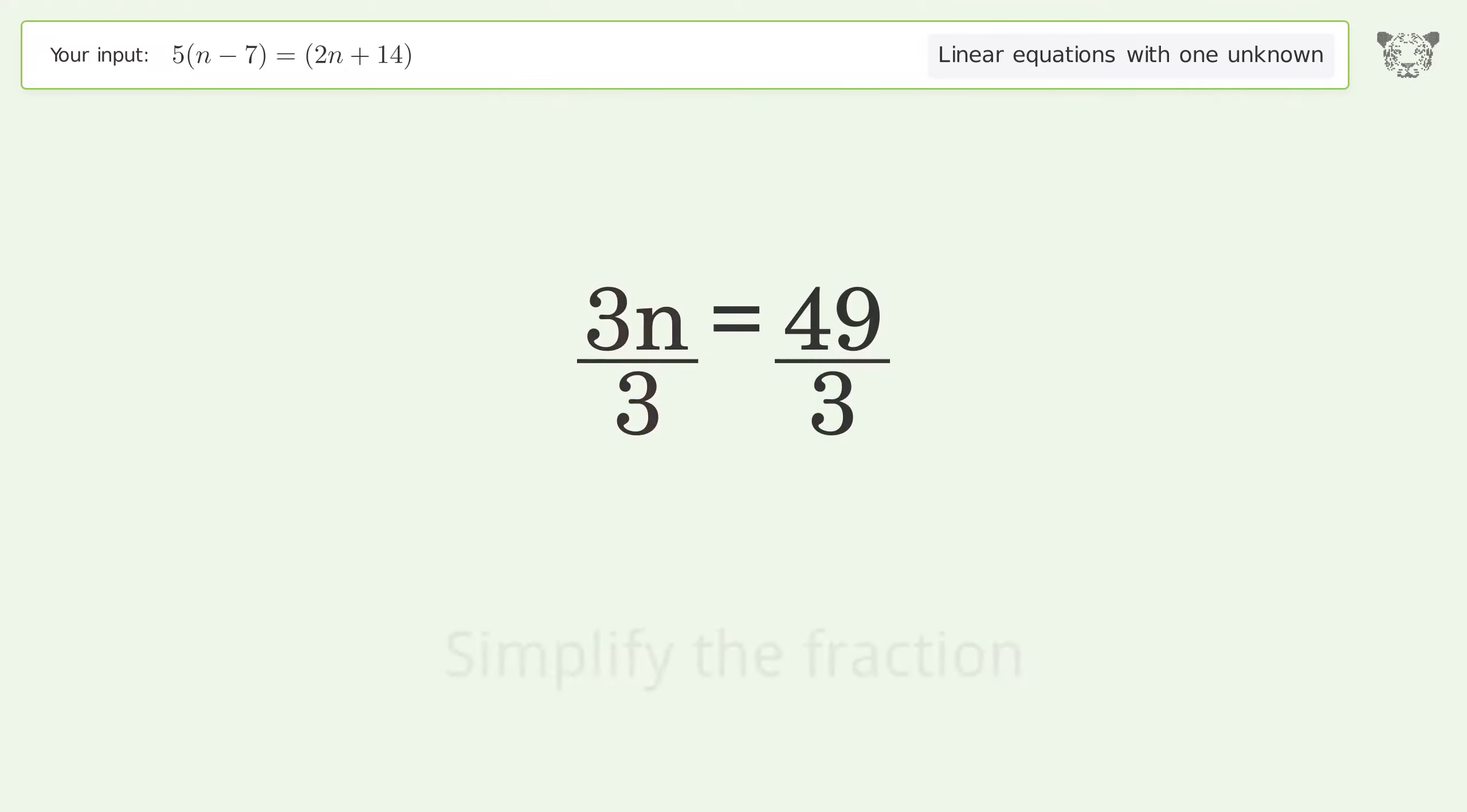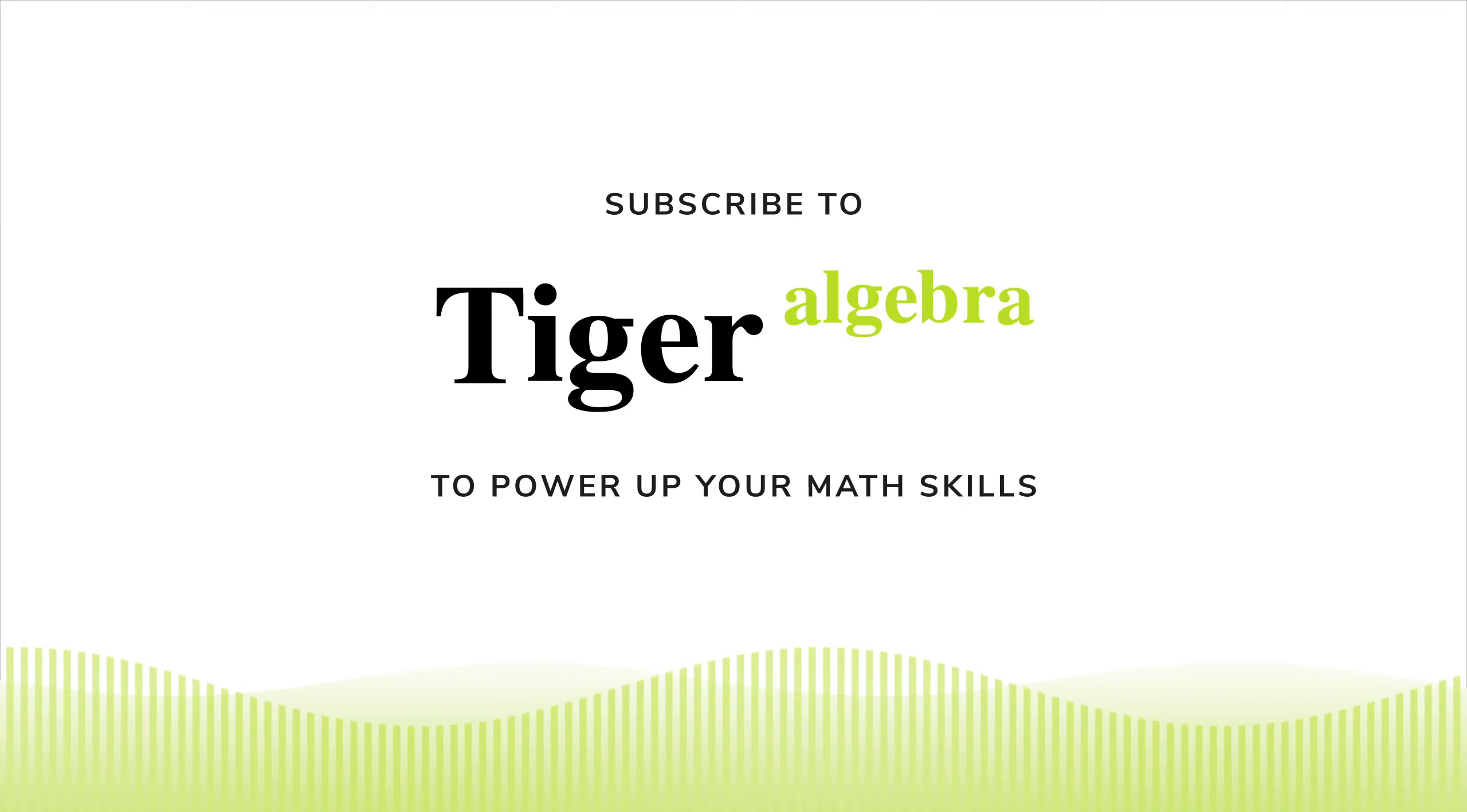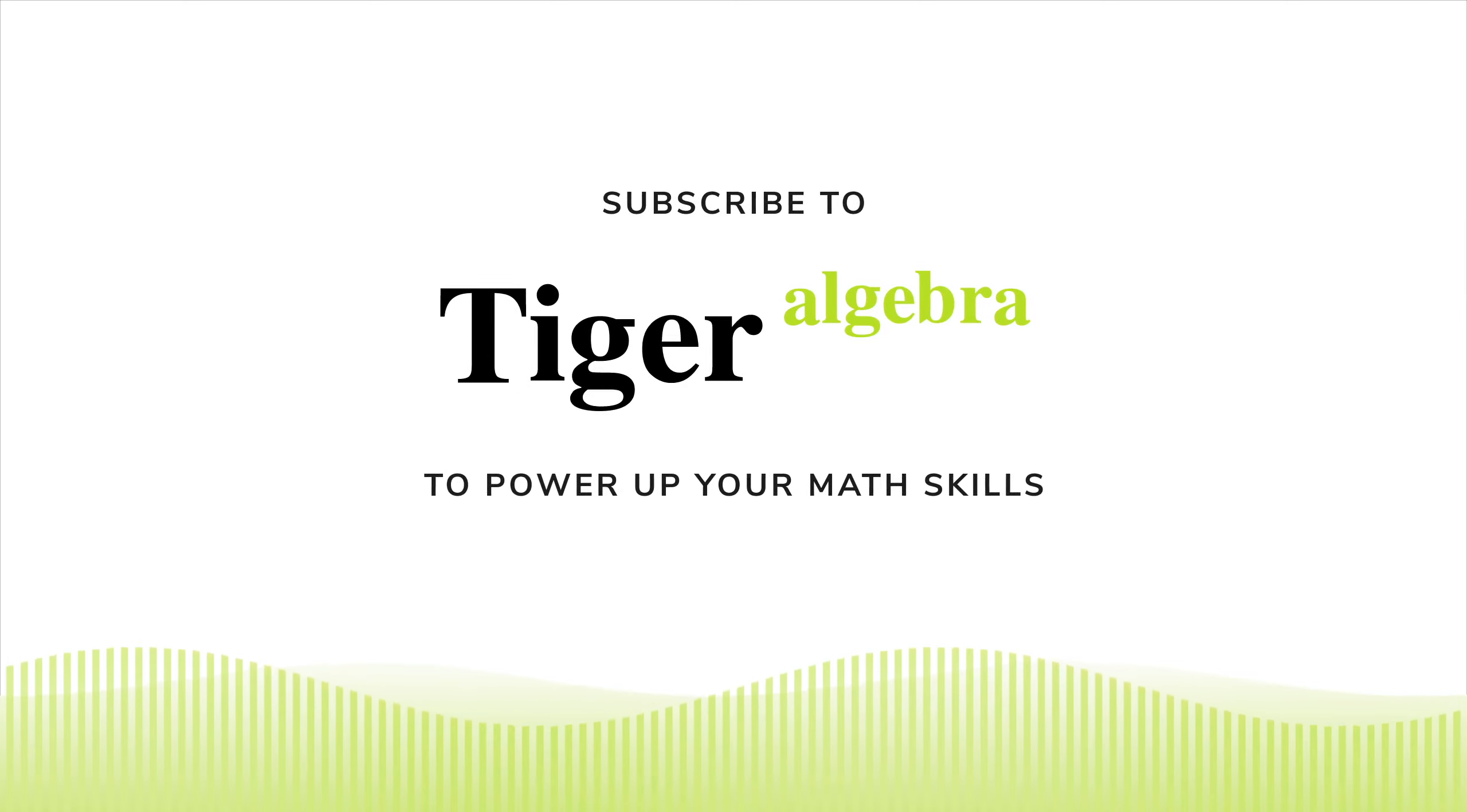Isolate the n. Divide both sides by 3. Simplify the fraction. And so the final result is n equals 49 over 3.